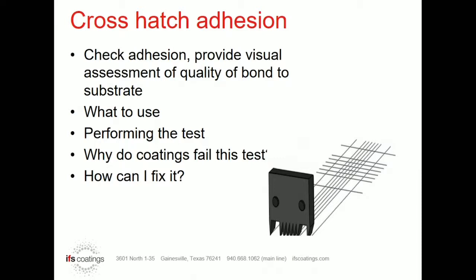If you fail this test, it tells you two things: either your substrate is not cleaned properly or has some debris that prevents adhesion, or your powder was not cured and the coating is not performing and adhering the way it should. Those are really the two things to find out from that test. There could be times where certain product types don't adhere as well to certain substrates like galvanized, and you may need to engineer around that, but it's normally either substrate not proper or cure not proper if you fail.